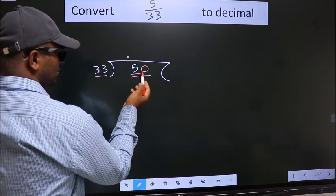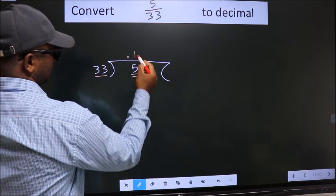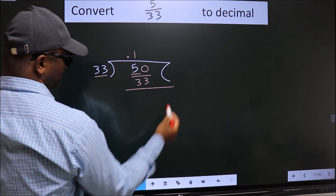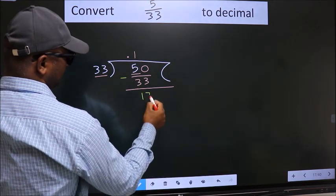A number close to 50 in the 33 table is 33 ones, which is 33. Now, we subtract. We get 17.